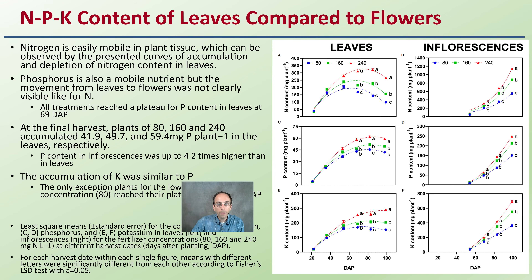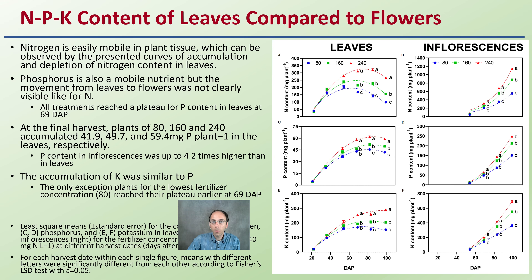Looking at NPK levels in leaves compared to flowers — blue represents the lower, green the mid, and red the higher fertilization rates. Nitrogen is easily mobile in plant tissue, which can be observed by the presence of curves of accumulation and depletion within nitrogen levels. Phosphorus is also a mobile nutrient, but movement from leaves to flowers was not as clearly visible as it was for nitrogen.